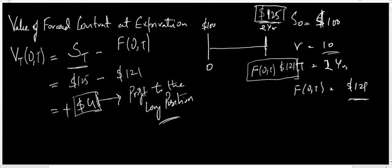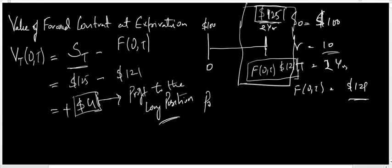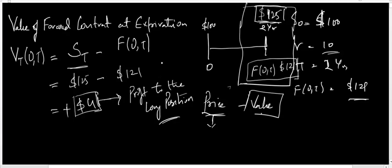I did not discount because I am calculating the value at the same time period — there is no need to discount it back. The fundamental question is: what is the difference between price and value? The price of a forward contract is the price agreed upon by the parties to buy and sell the underlying. Value means the difference between the spot price at that period of time and the forward price.